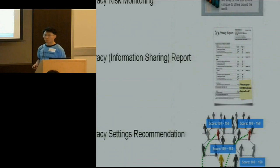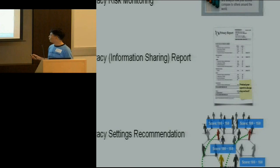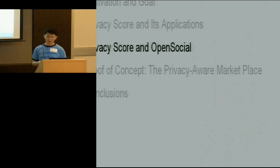Given the privacy score, the natural applications include privacy risk monitoring, privacy reports similar to credit reports that tell you what information you've shared and who can view it, and privacy setting recommendations. For example, if a user wants to lower their privacy score to a range of 100 to 150, the system analyzes the population, finds other users whose scores fall in that range, and uses their most common or average settings as a recommendation — similar to a collaborative filtering system.